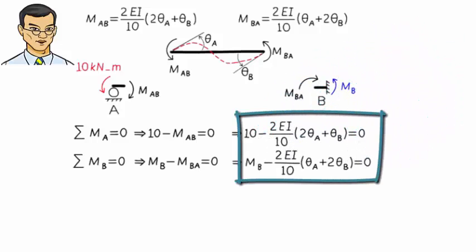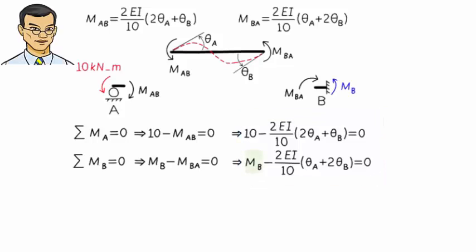Here we have two equations but seemingly three unknowns, right? So, how do we solve for MB, theta A and theta B using only two equations?